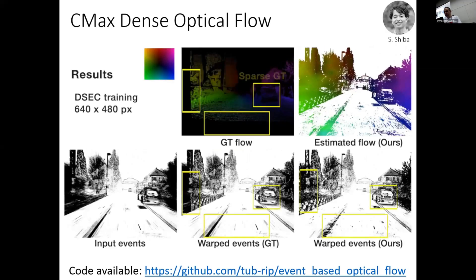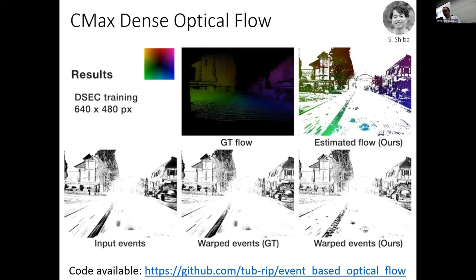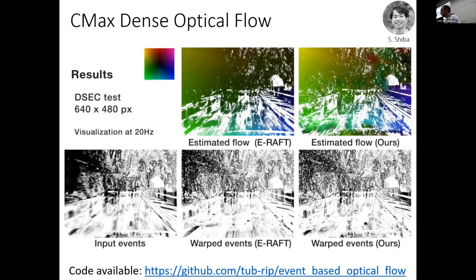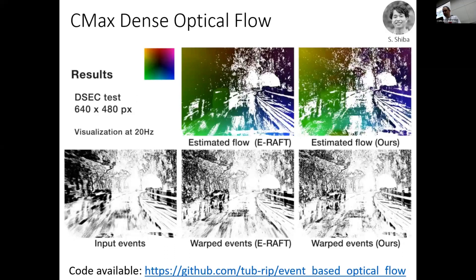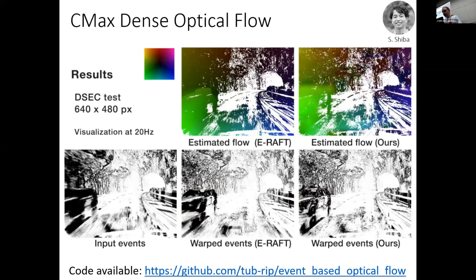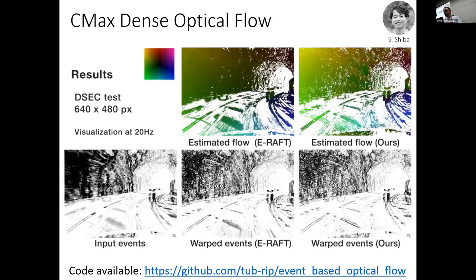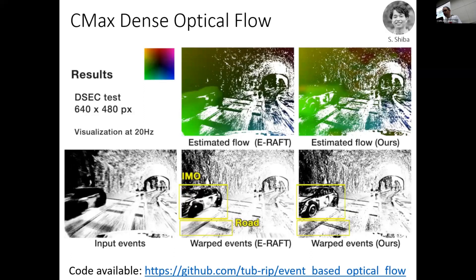Here is data from the DSEC dataset from David's lab. We compare with other solutions including the supervised method ERAFT. The dataset doesn't contain independently moving objects, but our method doesn't rely on any labeling, so we are still able to get accurate flow and sharp images for those independently moving objects.